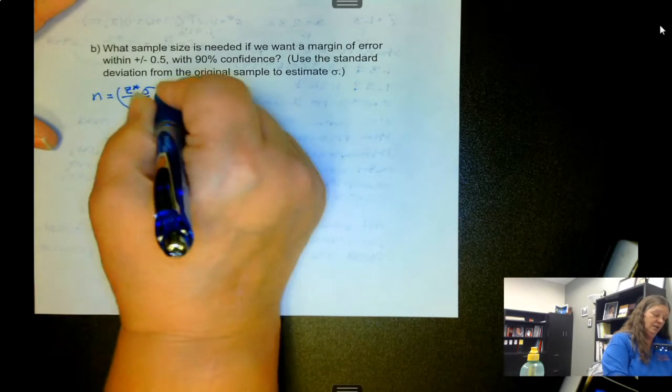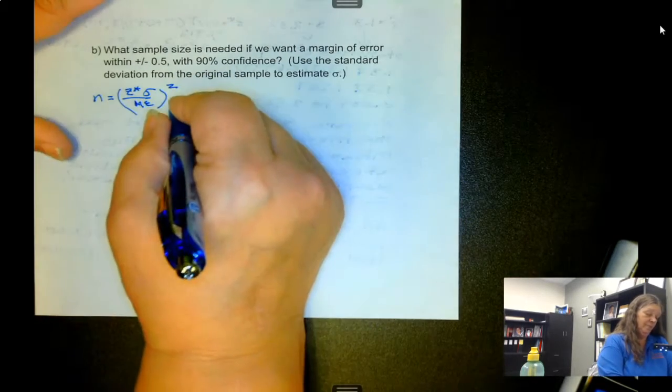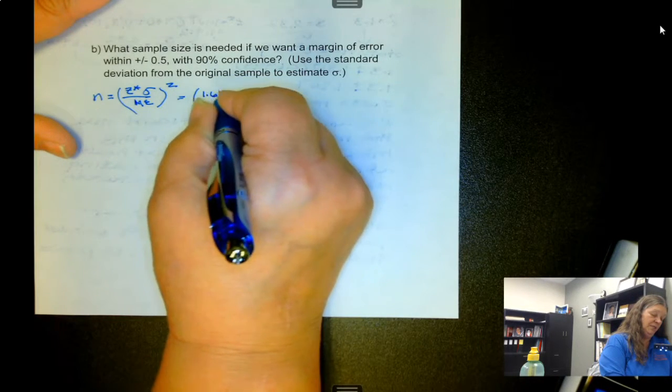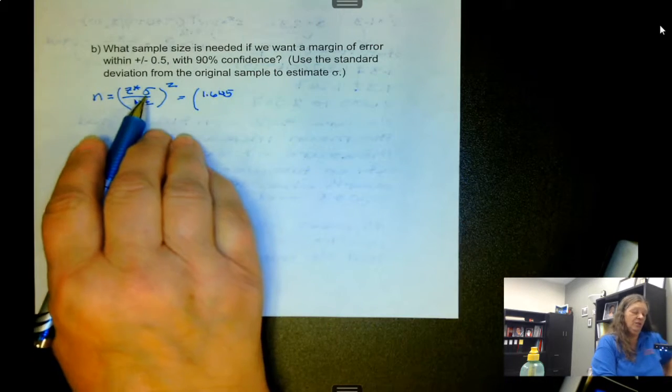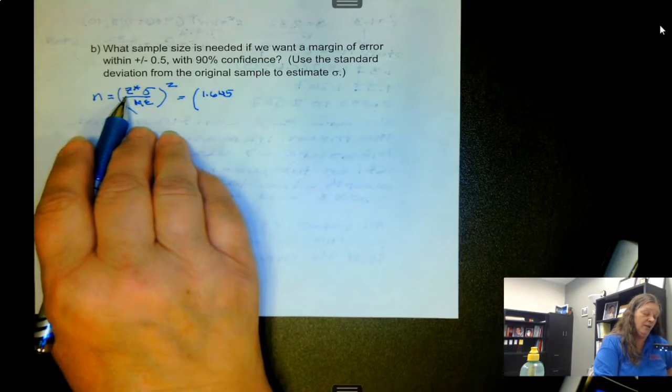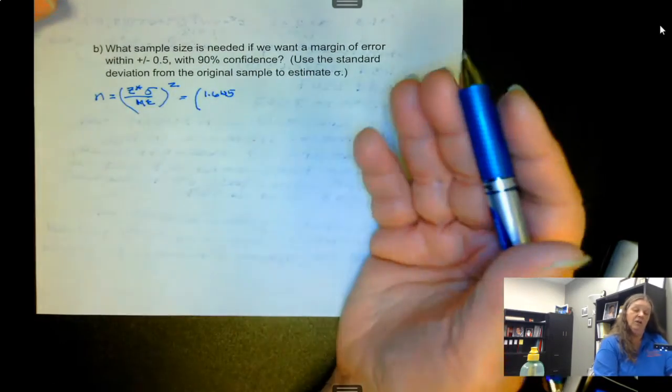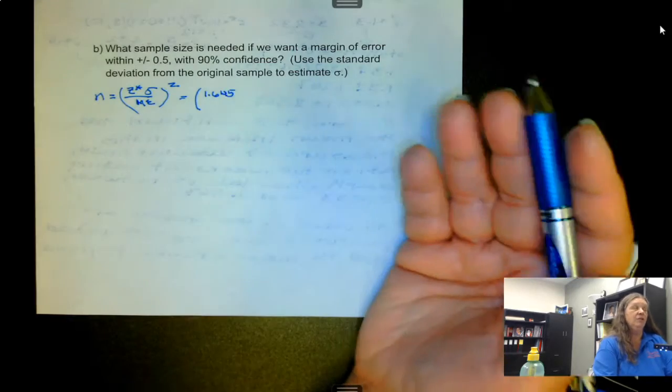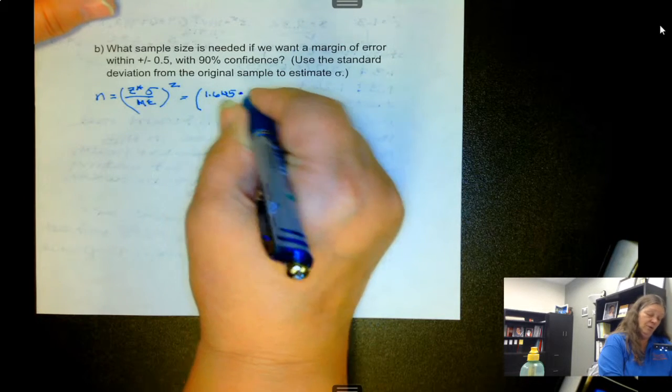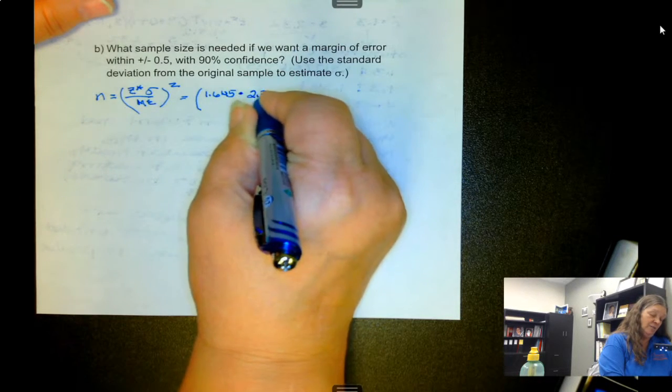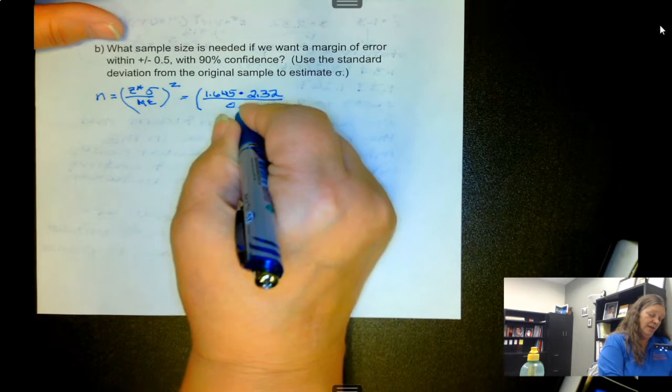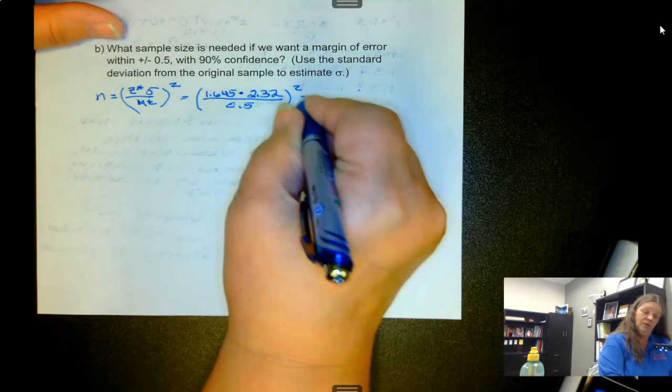So we have Z-splat times sigma over the margin of error squared. For 90% confidence interval, Z-splat is 1.645. Because we want to use the population standard deviation, it's why we can use Z. And also because we're looking for the sample size and we're assuming it's going to be more than 30. So it's 1.645 times 2.32 over the margin of error of 0.5, then we square it.